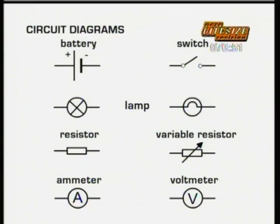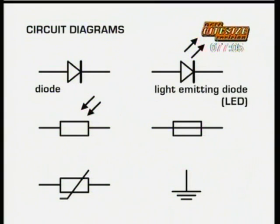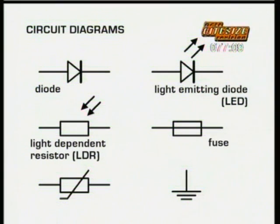In the Foundation Physics program, we looked at the symbols for the basic components of circuit diagrams. For the higher tier, you need to know a few more: a diode, a light emitting diode, a light dependent resistor, a fuse, a thermistor, and an earth connection.